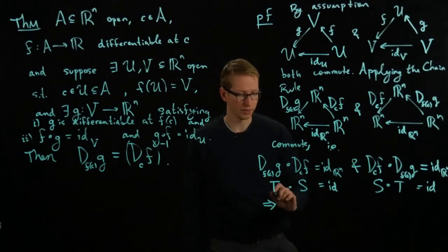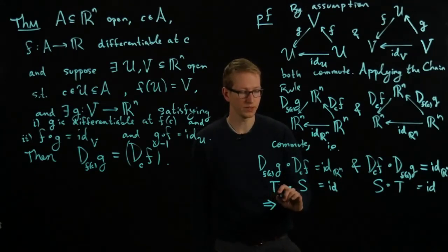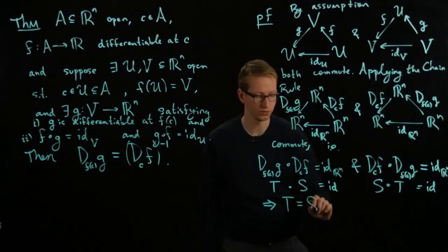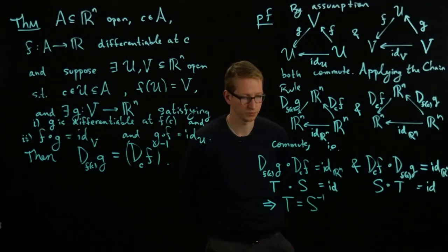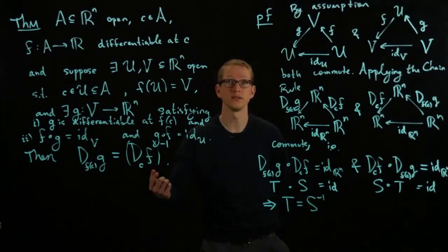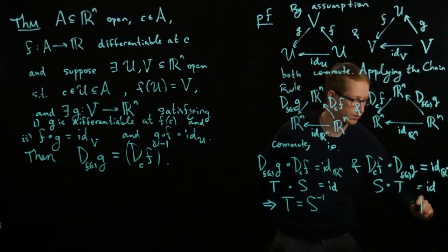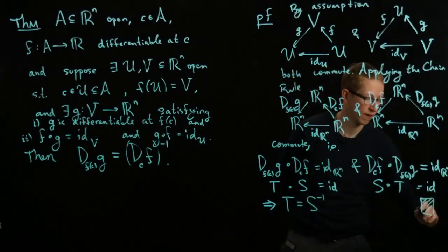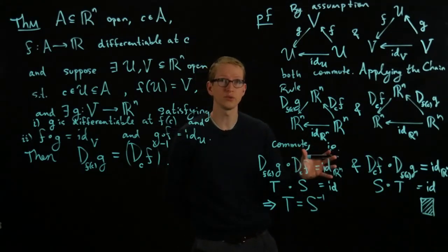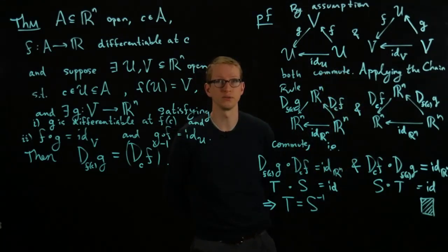Regardless, both of these conditions imply that T is equal to the inverse of S, and if we plug back in what T and S are we'll get exactly this equation. So that's actually the end of the proof, and it's an incredibly simple proof that's just using the chain rule and using diagrams from the chain rule.